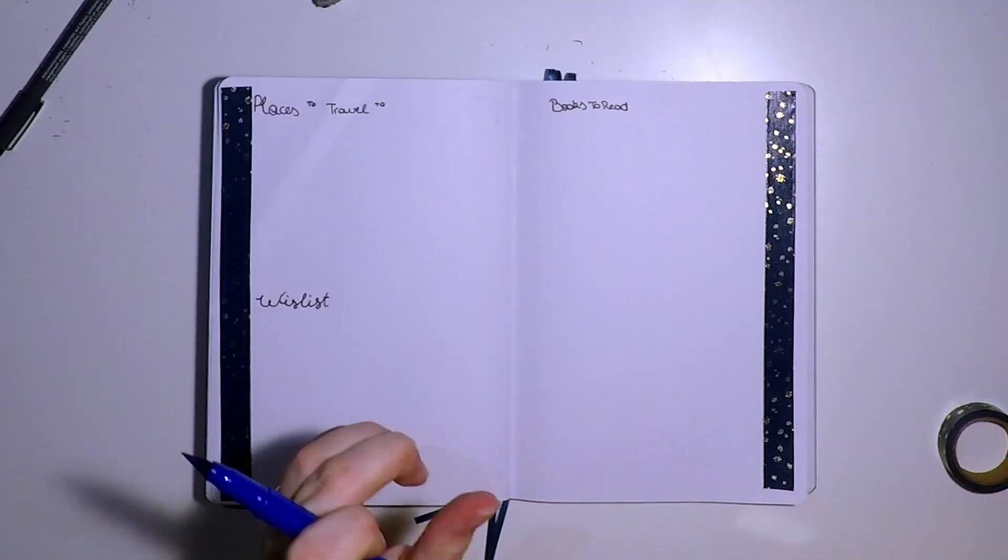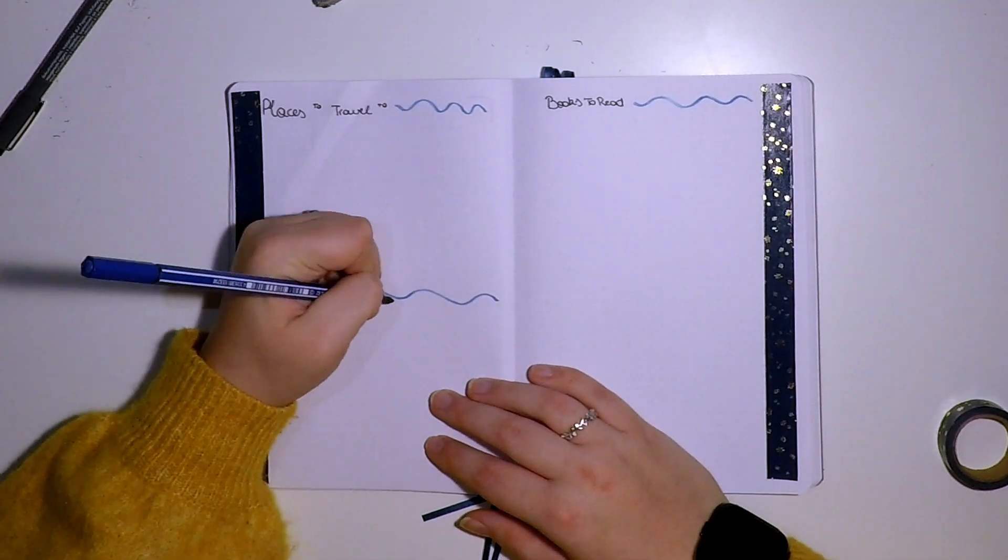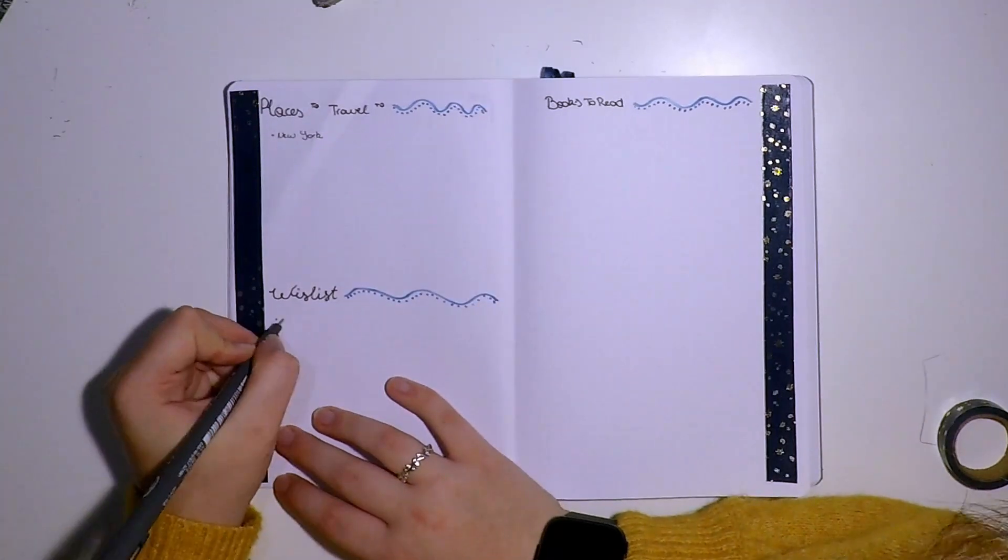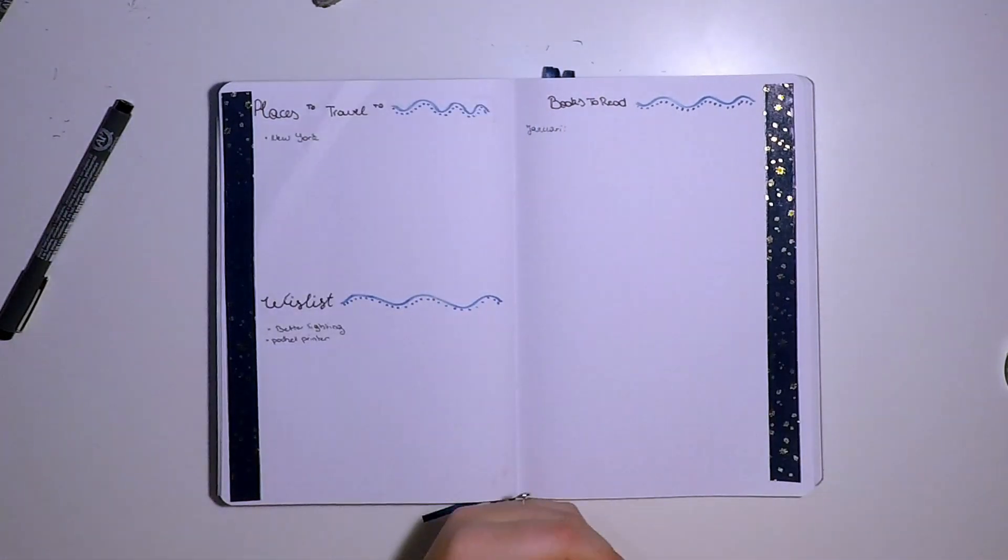So 'books to read' just doesn't make sense because it is a list of the books I'm going to read. So I'm just stupid. This page was a mess. But I did use my washi tape and I'm very happy about that.